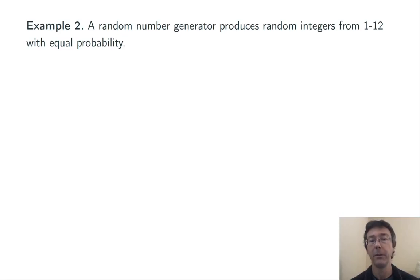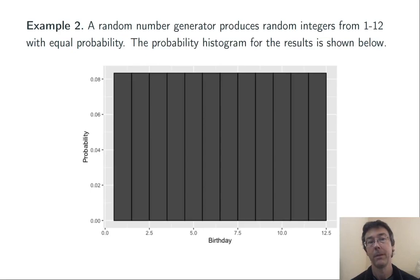Example 2 is a little bit of a demonstration. Imagine that you have a random number generator that's producing random integers from 1 to 12 with equal probability. Very roughly speaking, this is like picking somebody at random and finding out what month their birthday is. The probability histogram for individual results is very blocky because every x value between 1 and 12 is going to have the same probability, namely 1/12.